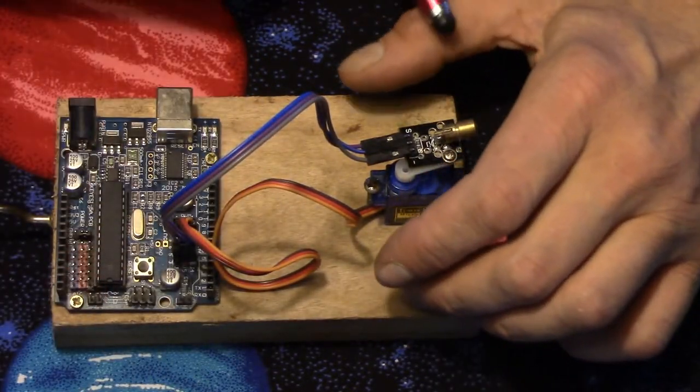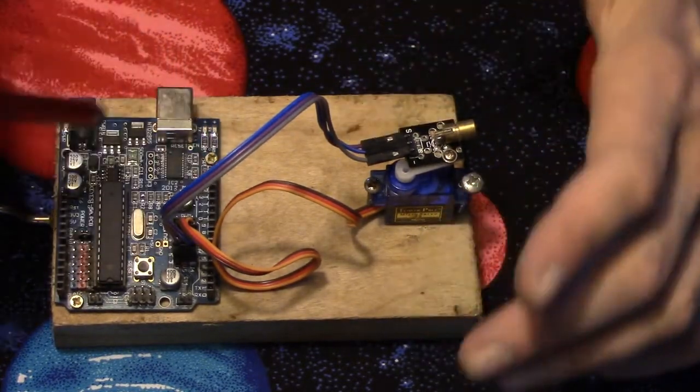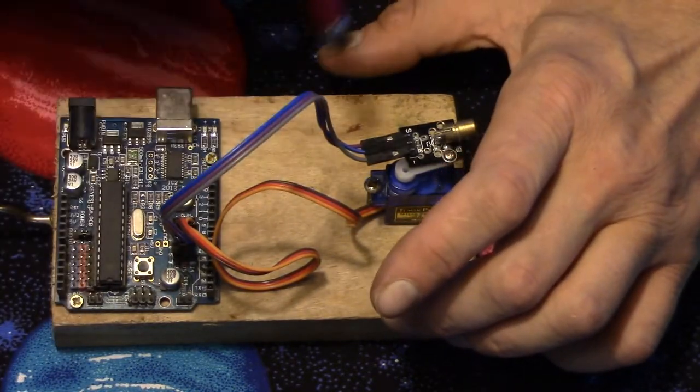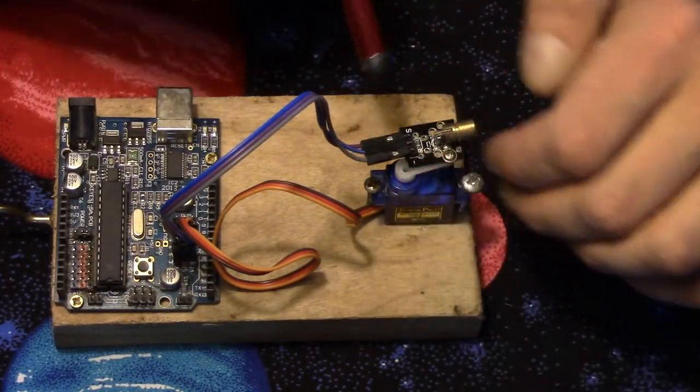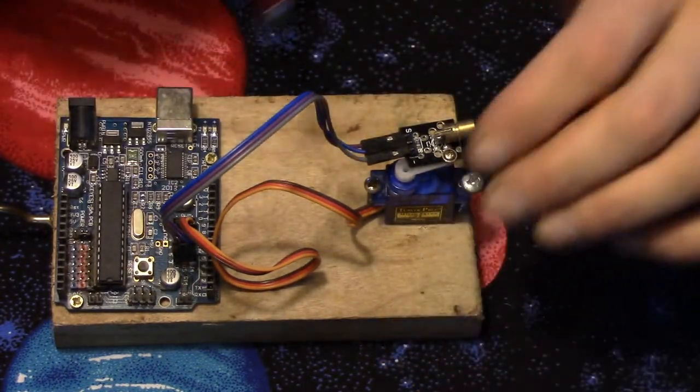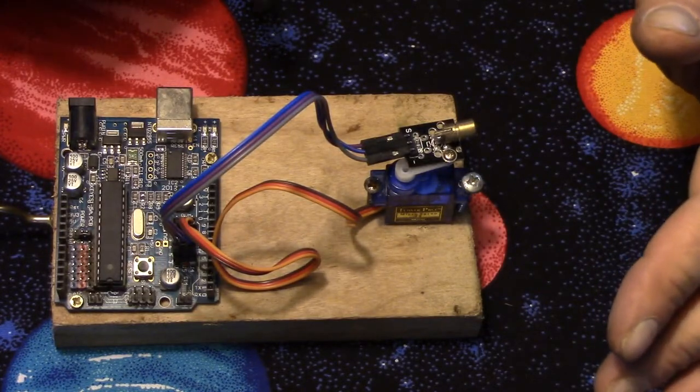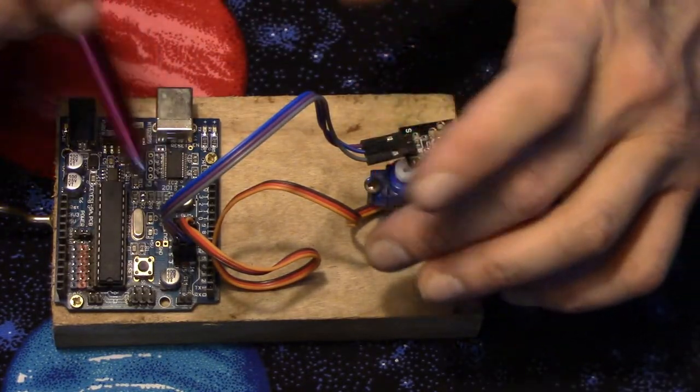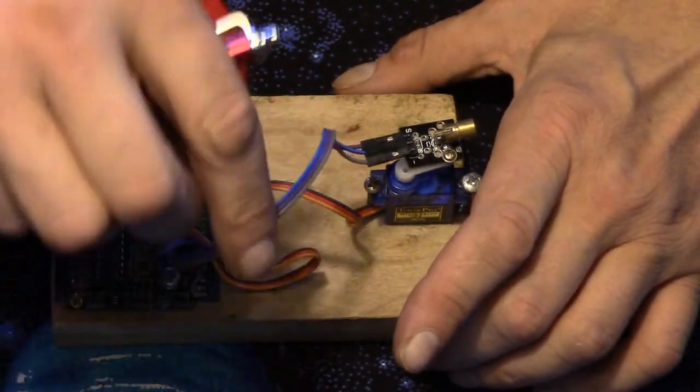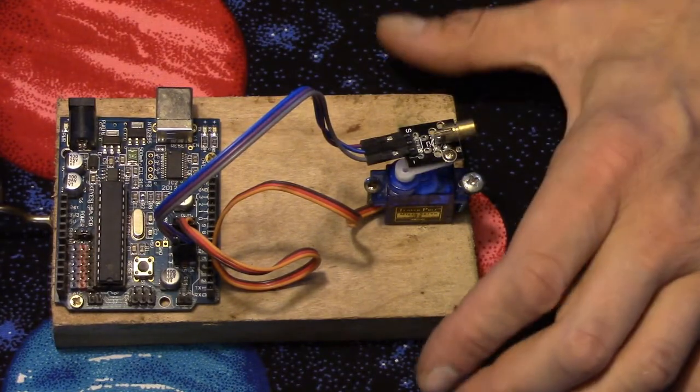Otherwise you just want to put the positive and the negative to the corresponding positive and negative on the Arduino board or your power supply. Now this one you can see it has a third wire, and the little laser module has one as well. That middle one, it's dead, doesn't do anything. But I just plugged them in so it wasn't flopping around because the jumper I had had three, so it worked.